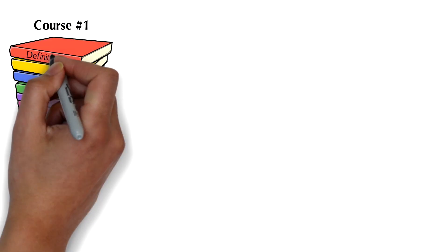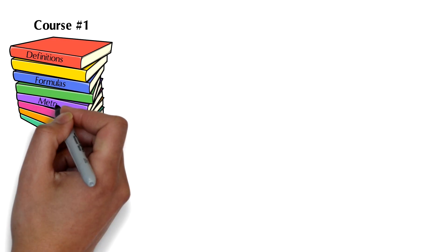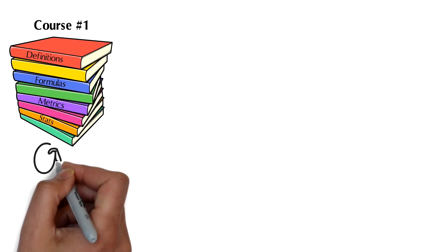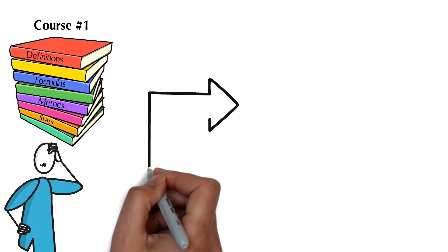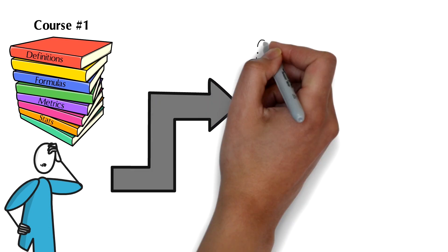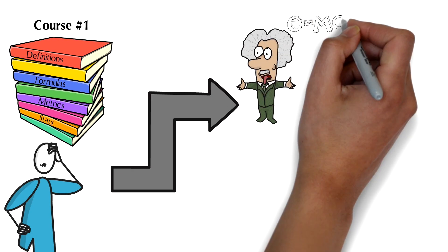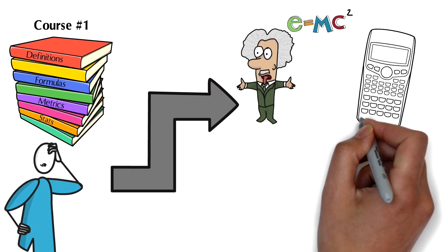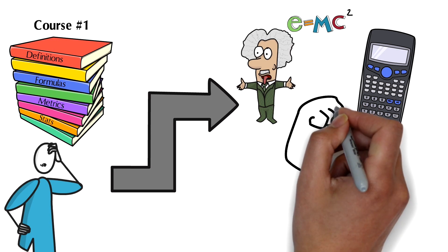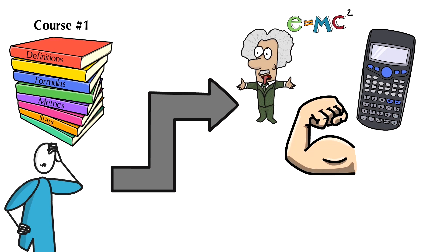Course number one taught you the definitions and formulas for the leading metrics in use today. Course number two will go deeper into the evolution of those metrics and help you understand the theory behind them, why they are calculated the way that they are, and how to best apply them considering their relative strengths and weaknesses.